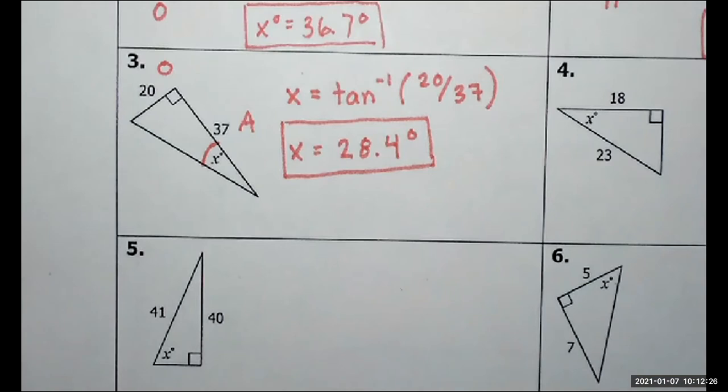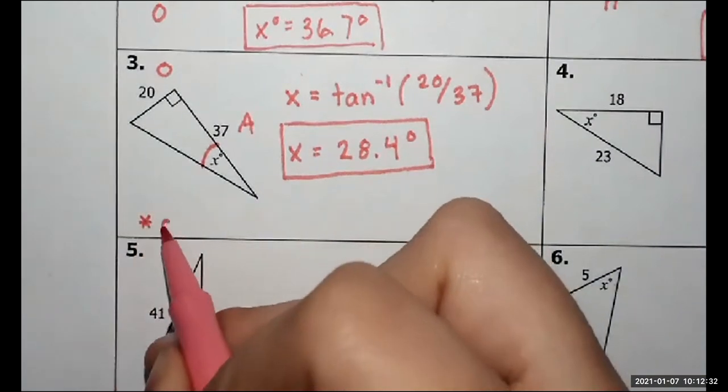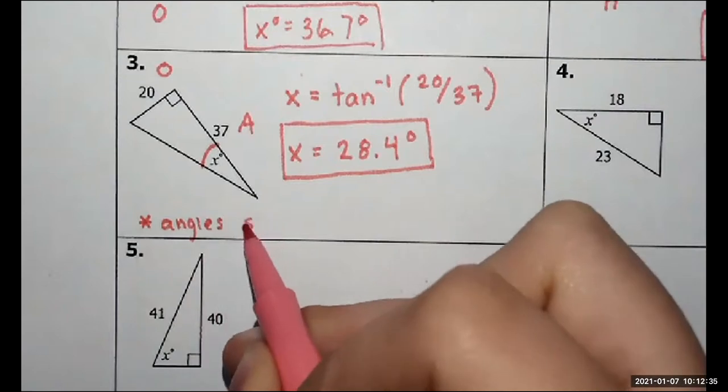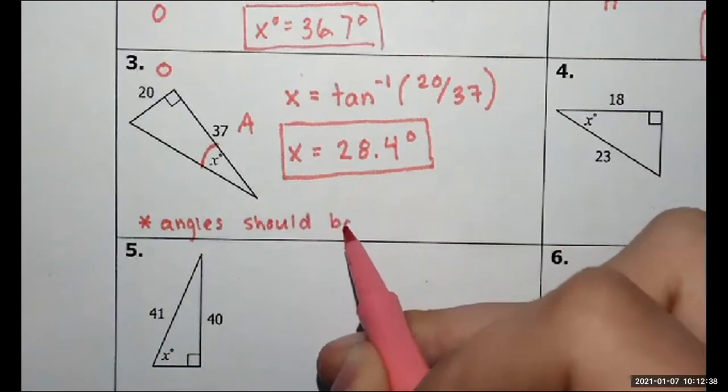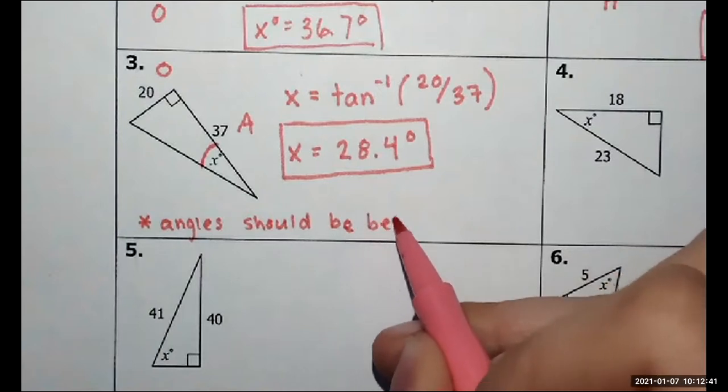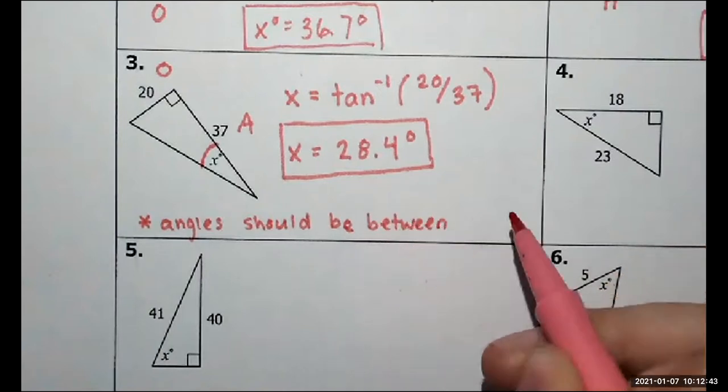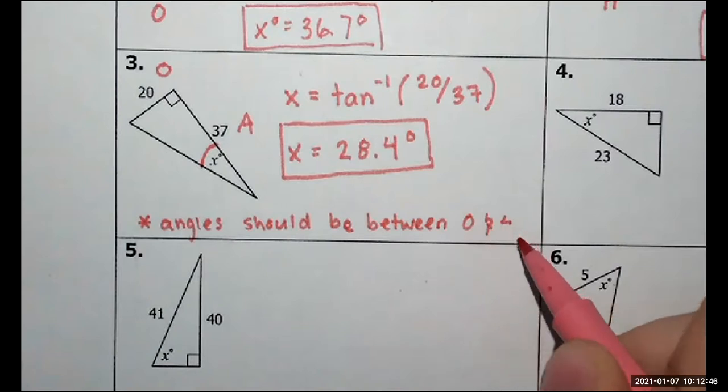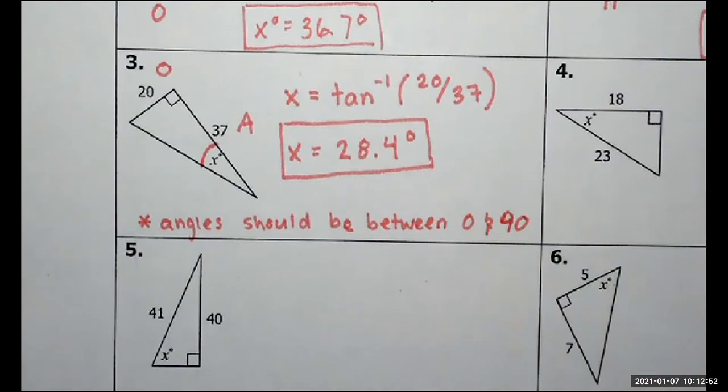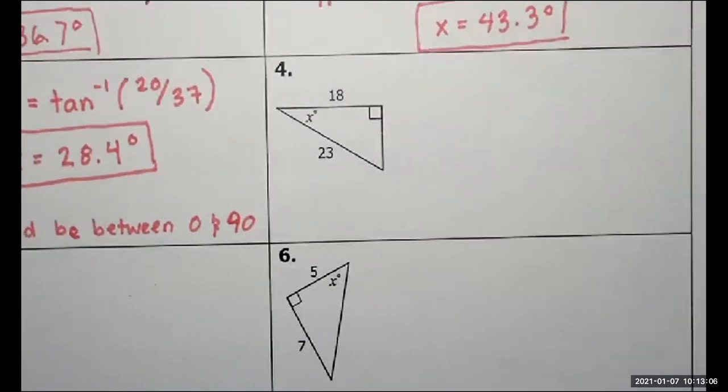And now I can jump straight into my calculator that I know how to set up. Tan inverse, 20 divided by 37. Bada bing, bada boom, we get 28.393. That rounds up to 28.4 degrees. By the way, a good way to check yourself is angles should be between 0 and 90. So for the most part, it can't be 90 or greater. And obviously, it can't be 0 or lower. So you should be getting a number between those ranges. And if you're not, that's a problem. Just a heads up.